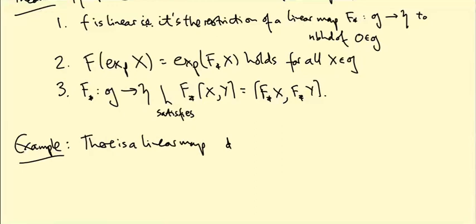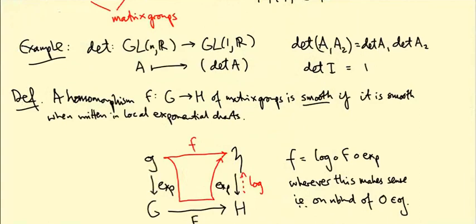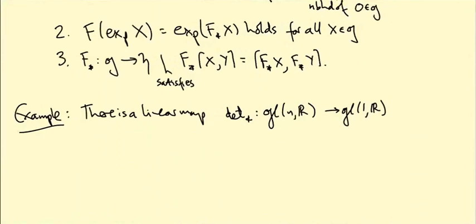which I'm going to call det star, from little gl(n,R) to little gl(1,R), because I was thinking of det as a map from big GL(n) to big GL(1),